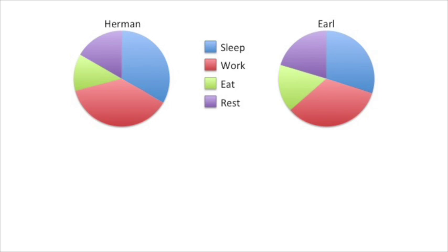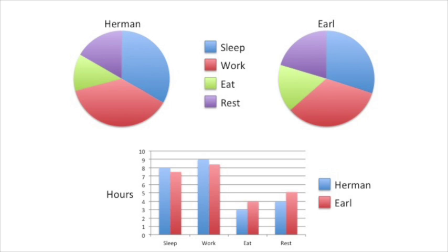With two pie charts the data become even more difficult to interpret. Here we have Herman versus Earl. Here's a question: does Earl work more than Herman, and if so, how much more? With pie charts this question is surprisingly difficult to answer. In contrast, with a bar chart it's much easier to answer this question and others like it.